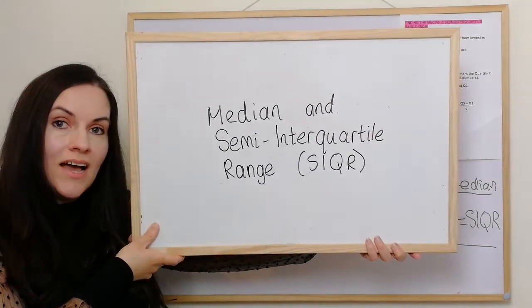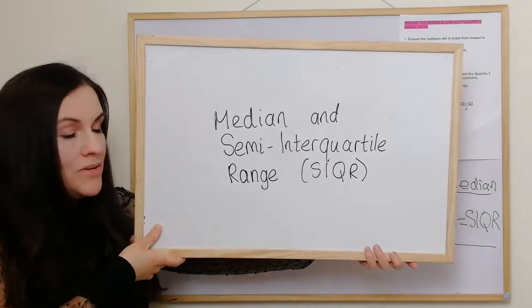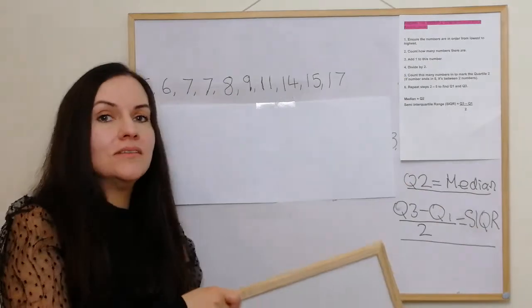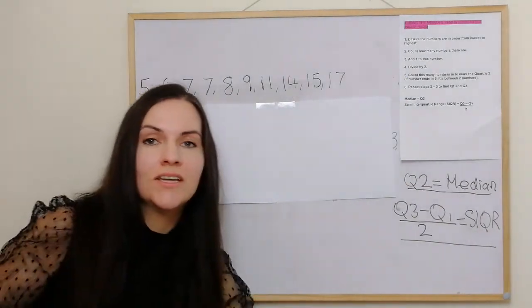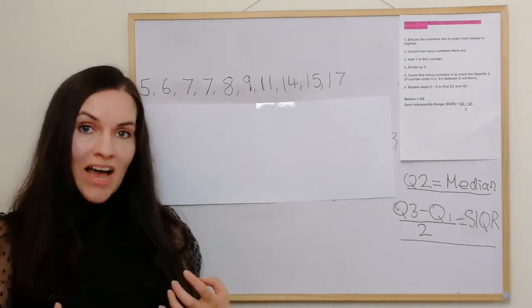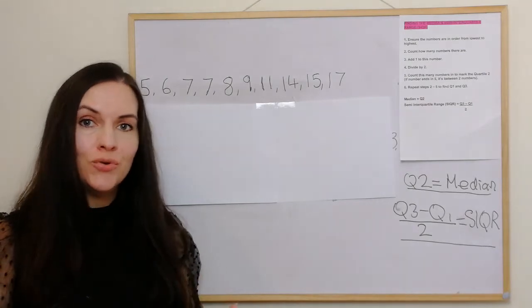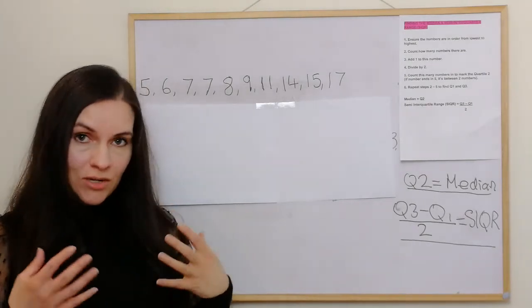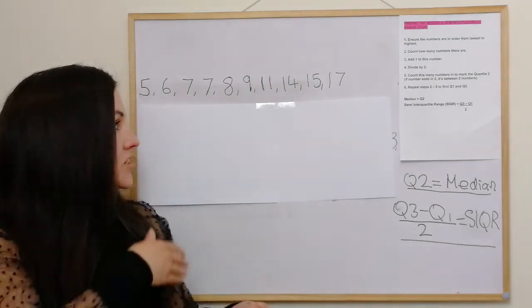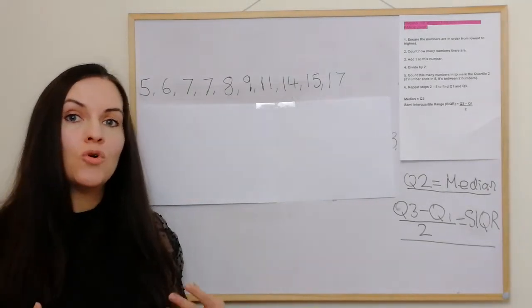Hi, my name's Arlene and this week we're going to be looking at the National 5 topic of median and semi-interquartile range. Median and semi-interquartile range is very similar to standard deviation, where you're working out a kind of average and then working out how consistent all the values are in relation to the average. Basically with semi-interquartile range, you're dividing a set of numbers into four equal parts — into quarters — hence the term quartiles.